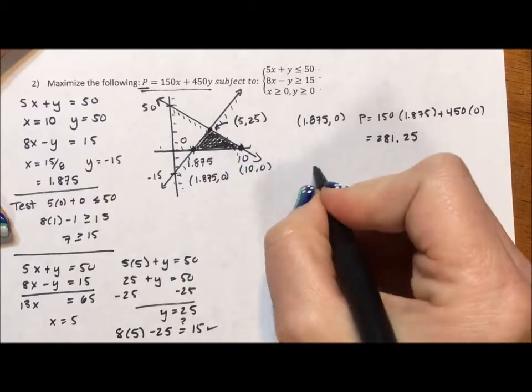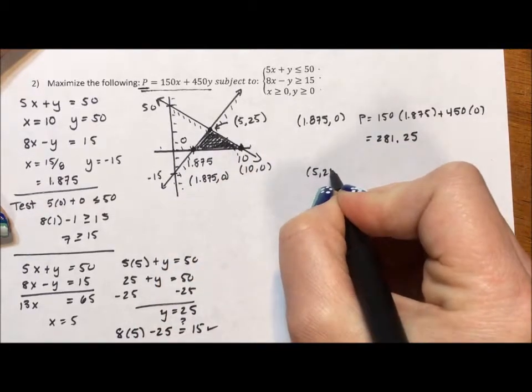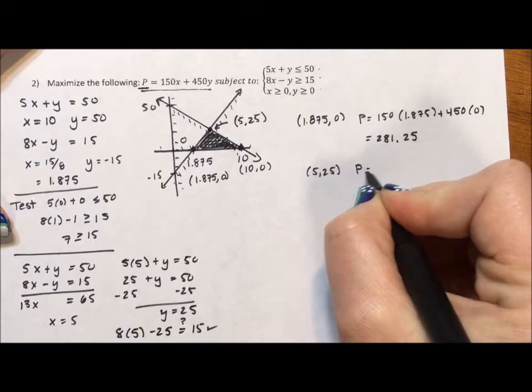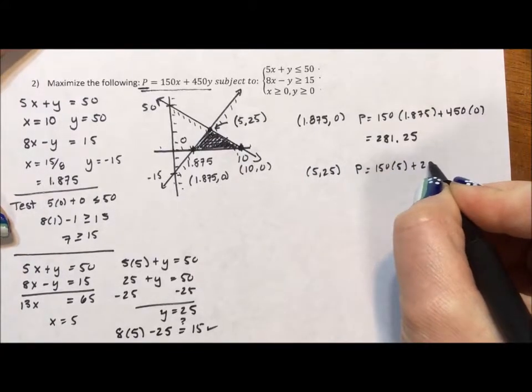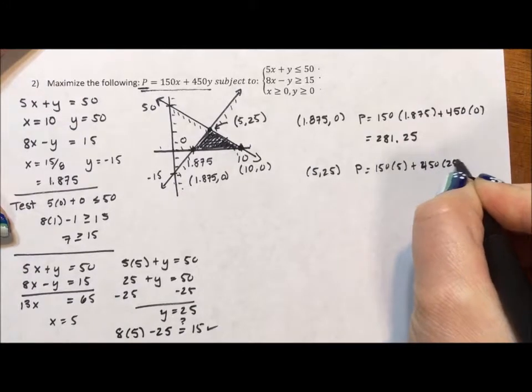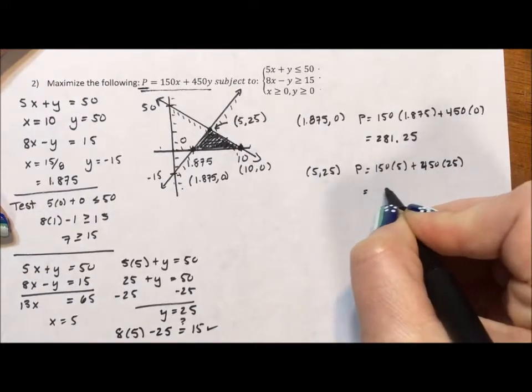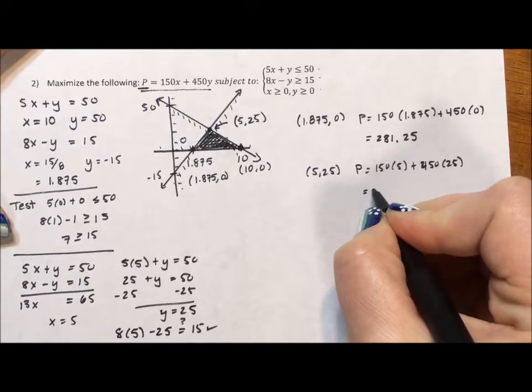Now I come to my next point, this 5, 25. If I test this point, I have 150 times 5 plus 450 times 25, which is going to equal 12,000.